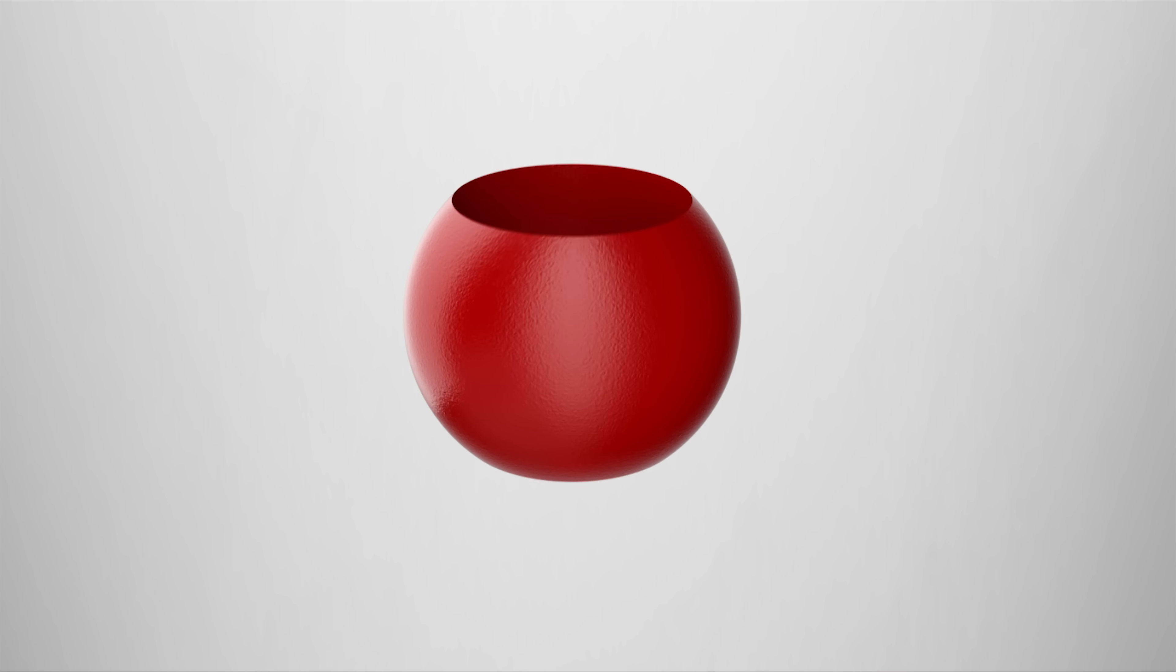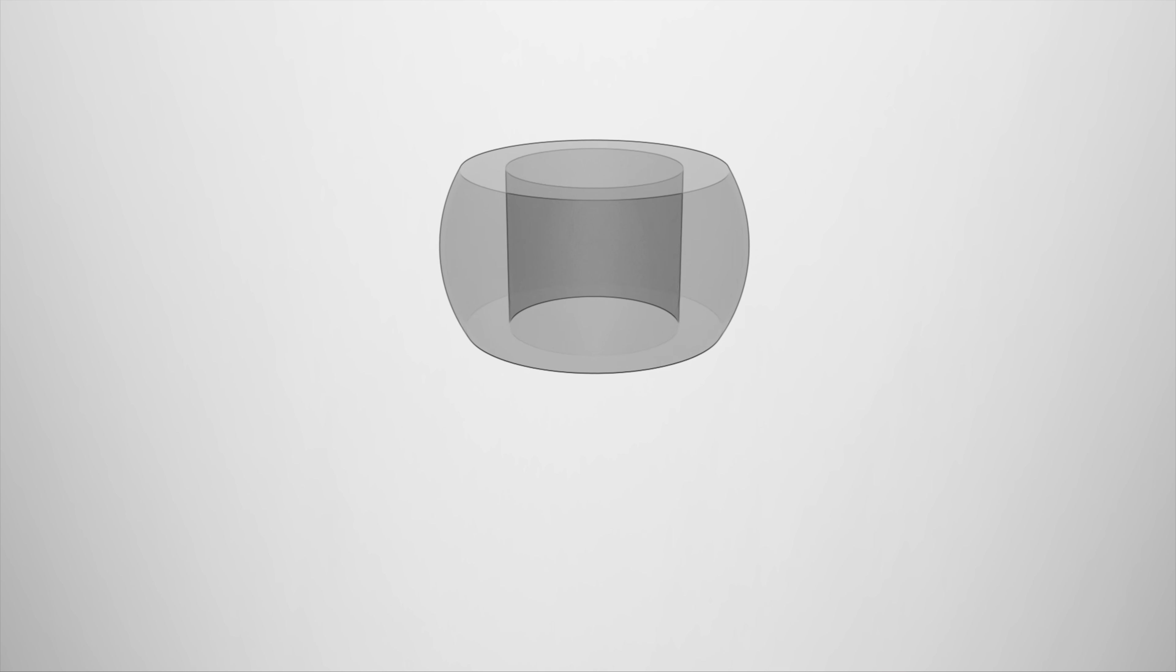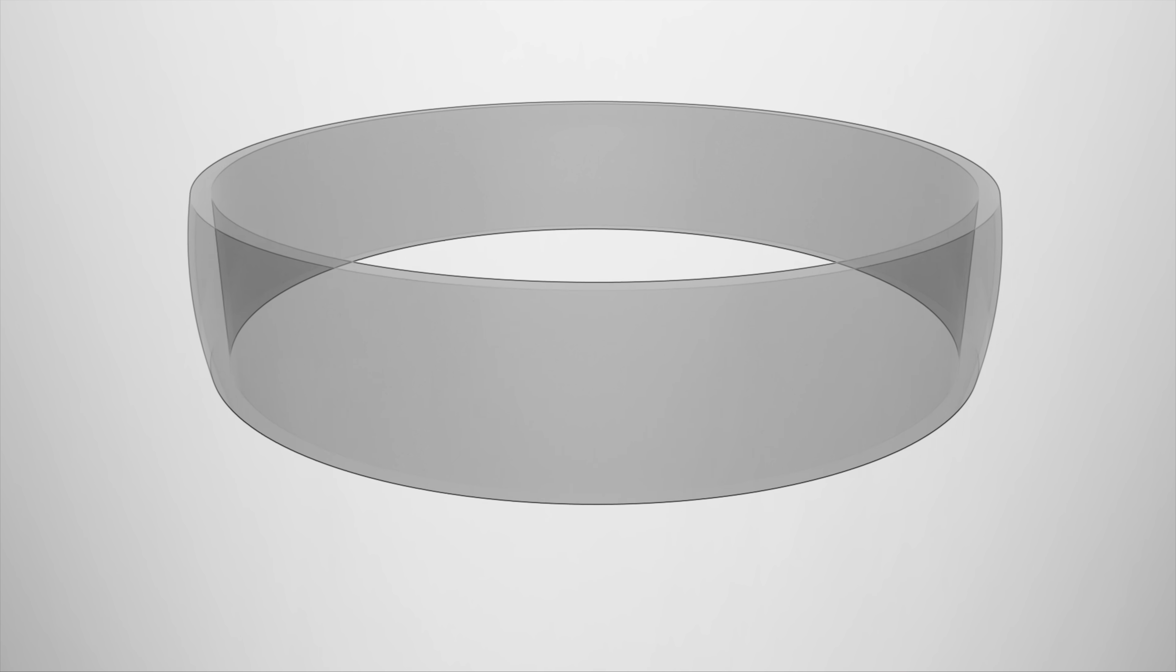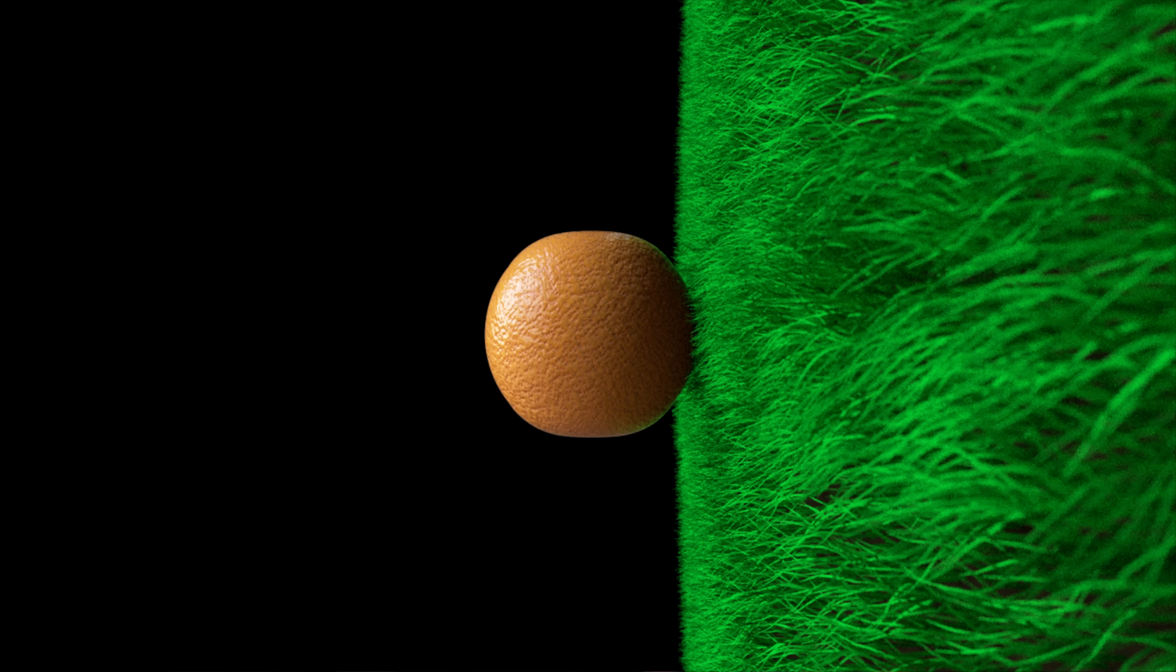It's a bizarre shape because if two napkin rings have the same height, well, they'll have the same volume regardless of the size of the spheres they came from. This means that if you cut equally tall napkin rings from an orange and from the earth, well, one could be held in your hand, the other would have the circumference of our entire planet, but both would have the same volume.